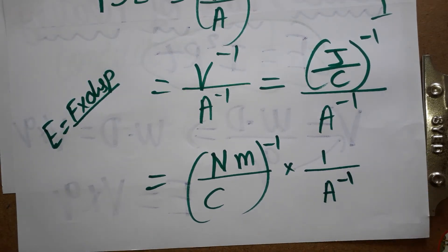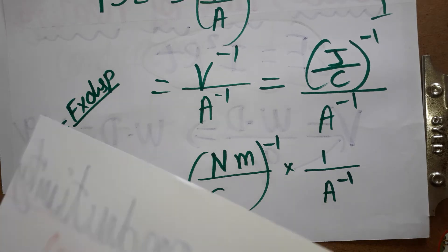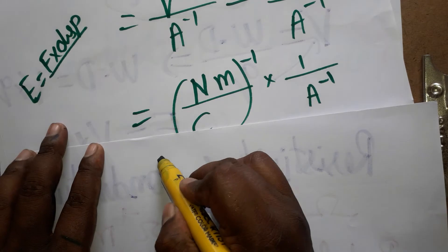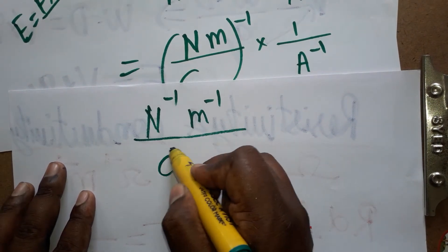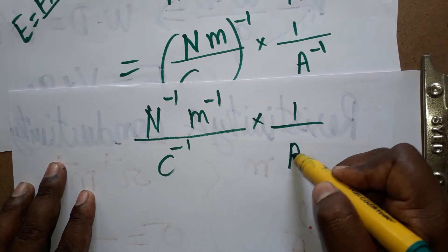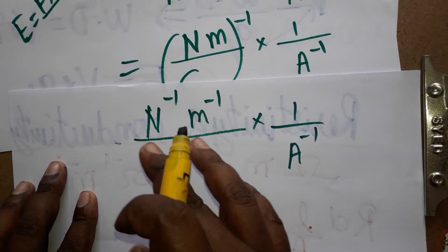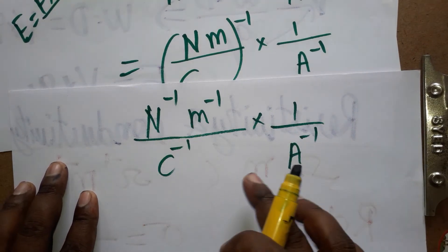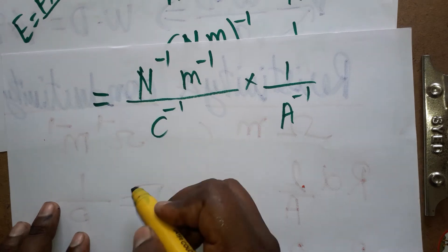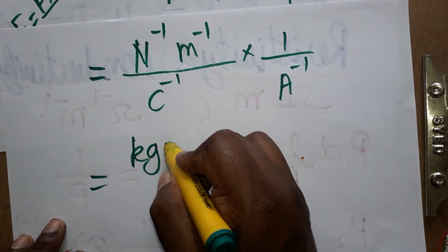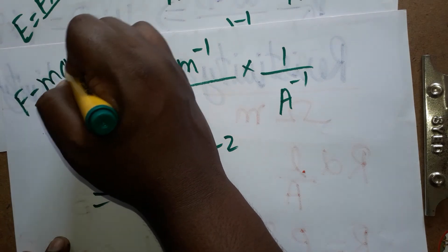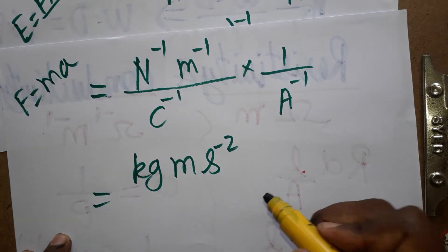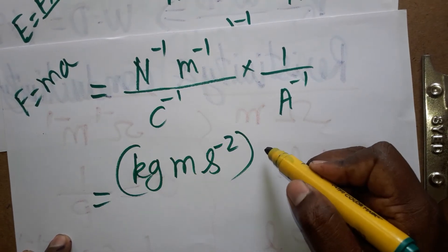Taking newton separately inverse, coulombs inverse, and meter inverse — we get newton inverse times meter inverse divided by coulombs inverse times 1 divided by ampere inverse. Now, newton is the unit of force. Force equals mass times acceleration, so newton equals kg times meter times second to the power minus two.